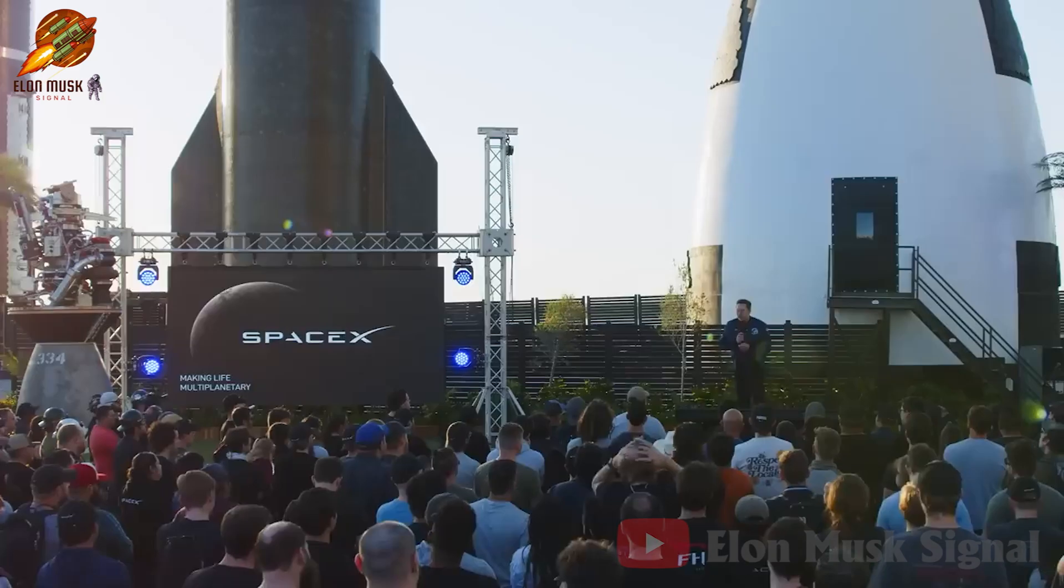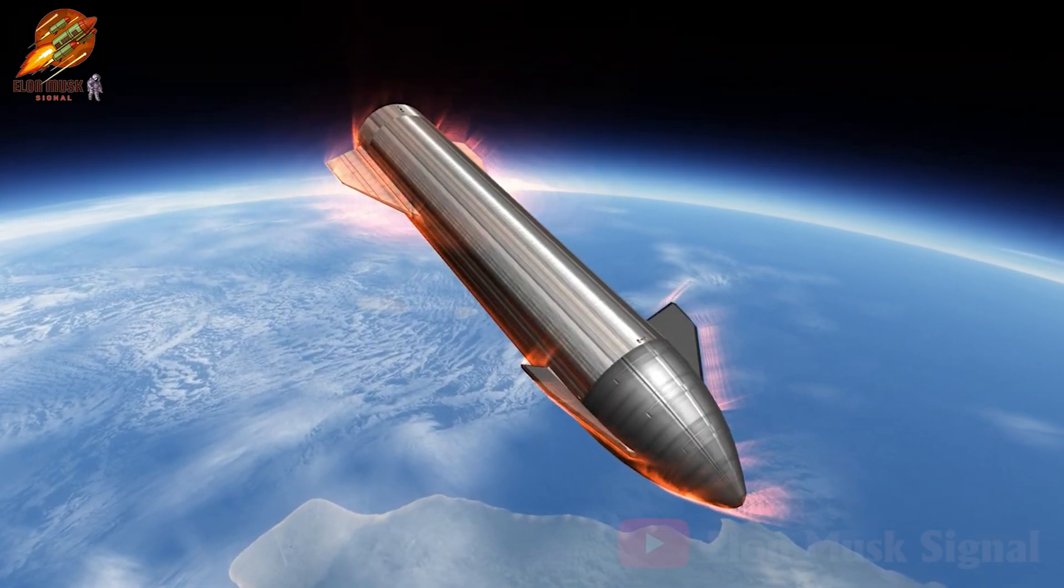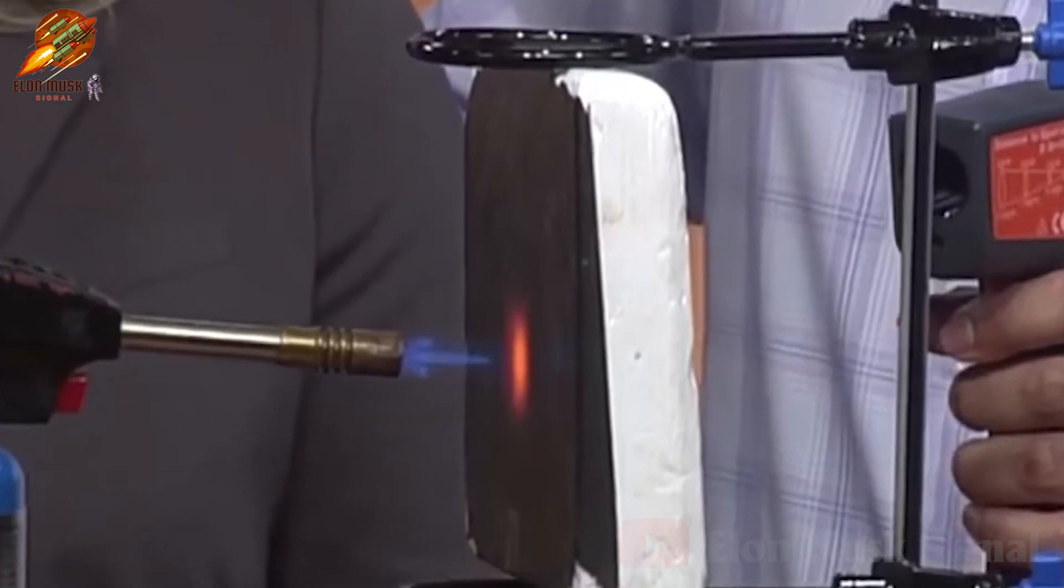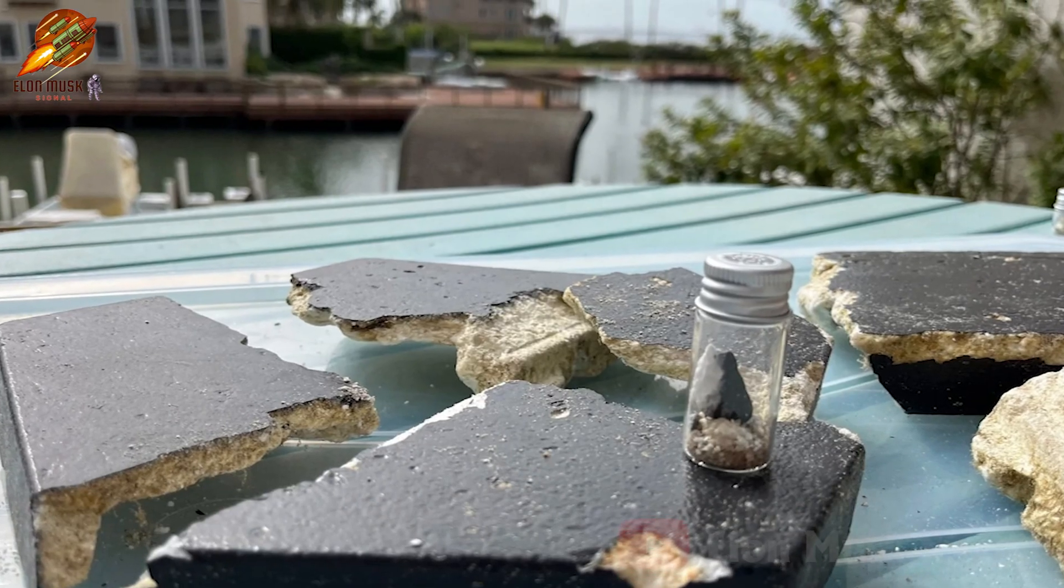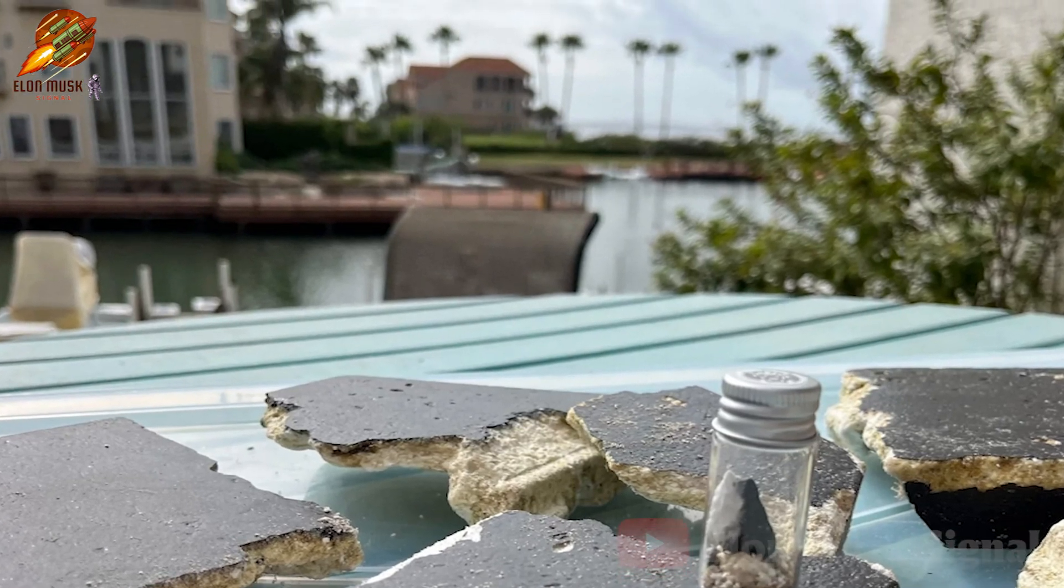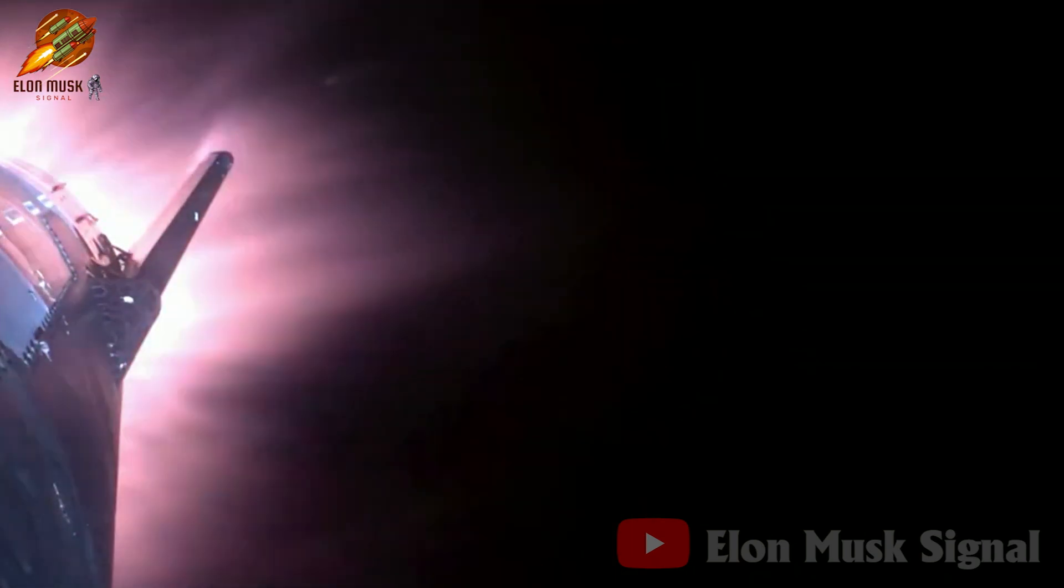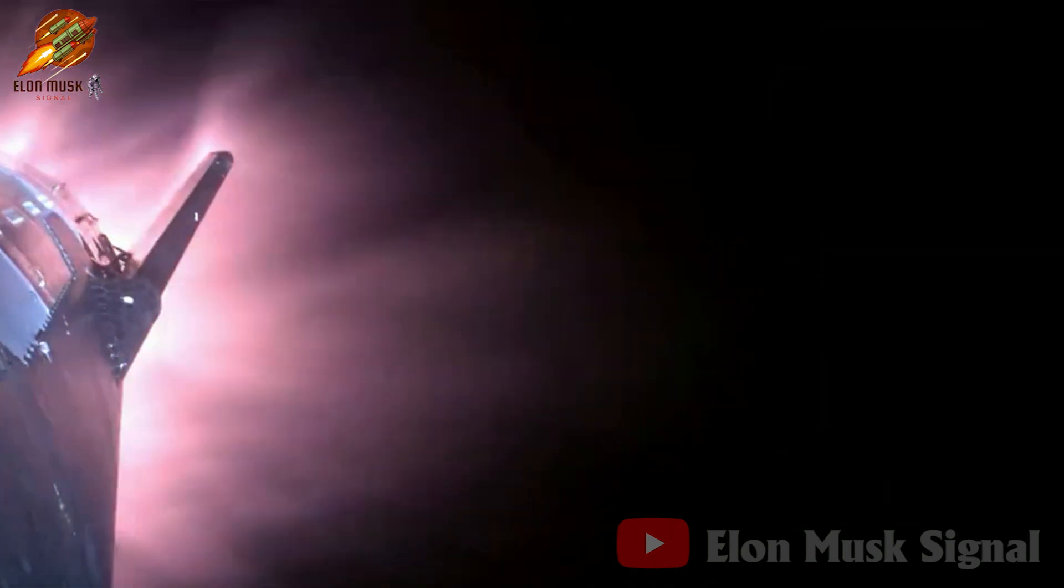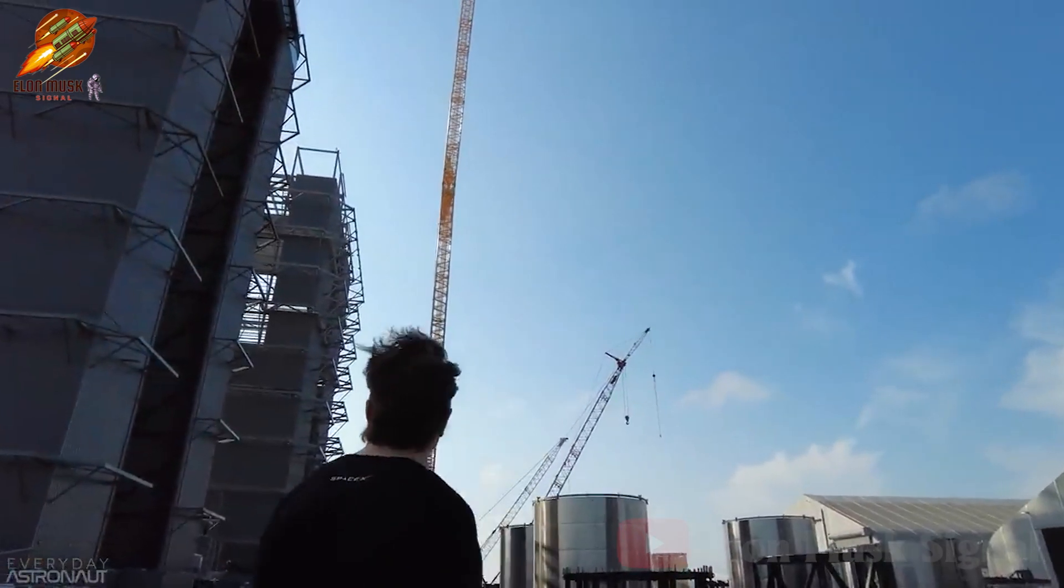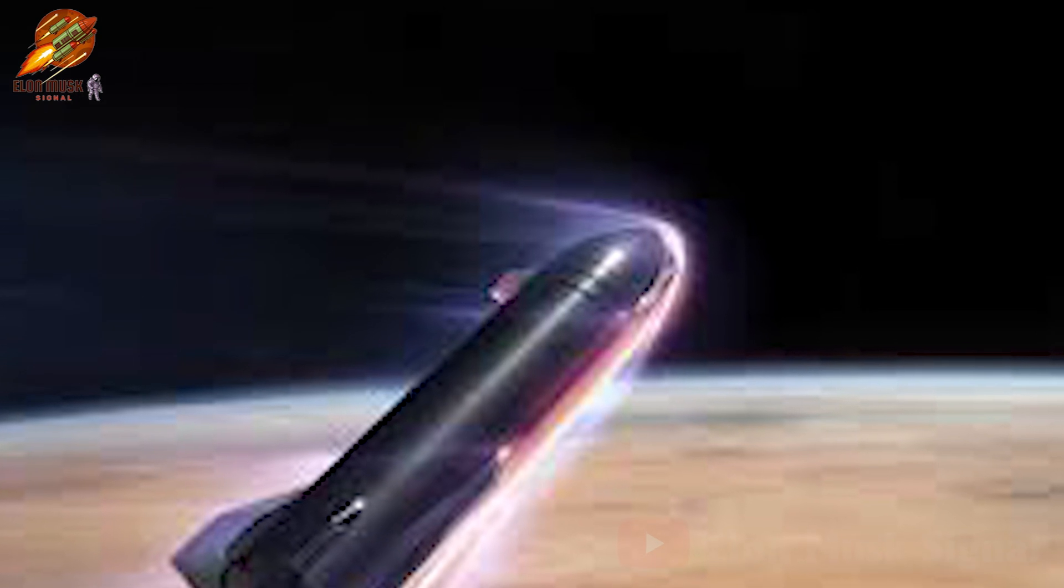Elon Musk and SpaceX face an enormous challenge protecting Starship from immense temperatures during atmospheric re-entry. Each heat shield tile plays a critical role like a warrior against fierce heat. A loss of just one tile could potentially cause the spacecraft to ignite in mid-air. Following Starship Flight 4, Elon Musk openly expressed his intention to overhaul Starship's entire heat protection system, emphasizing the necessity of a heat shield twice as strong as the previous version to withstand extreme temperatures.